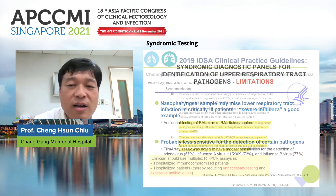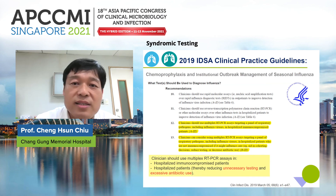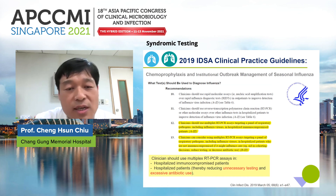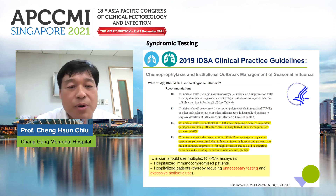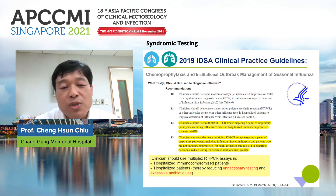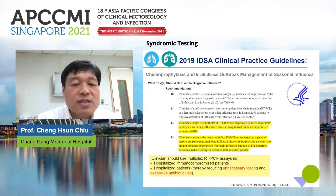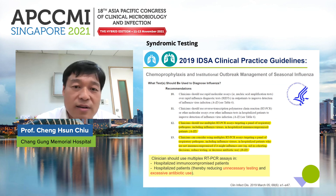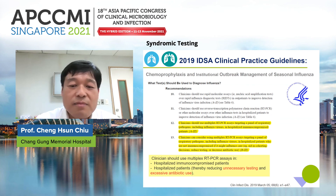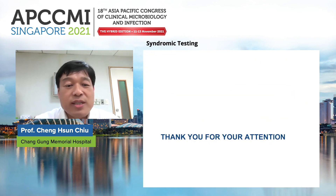The 2019 IDSA clinical practice guidelines clearly state that clinicians should use syndromic-based multiplex RT-PCR panels targeting multiple respiratory pathogens for hospitalized immunocompromised patients with pneumonia and for hospitalized patients with severe symptoms. With syndromic-based molecular testing, unnecessary additional testing and excessive antibiotic use can potentially be avoided. Thank you for your attention.